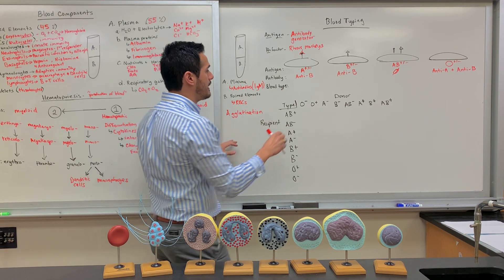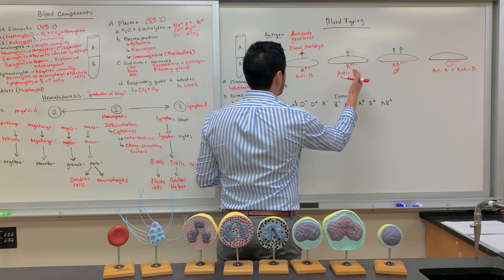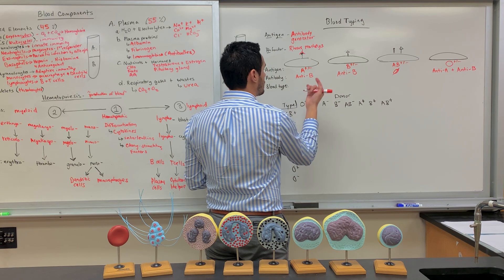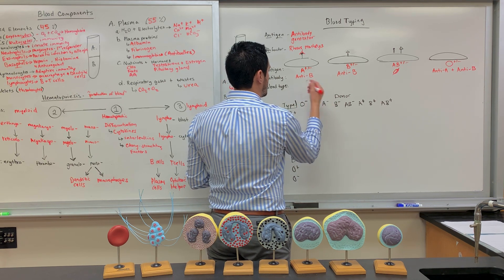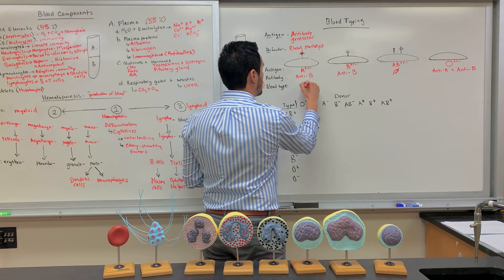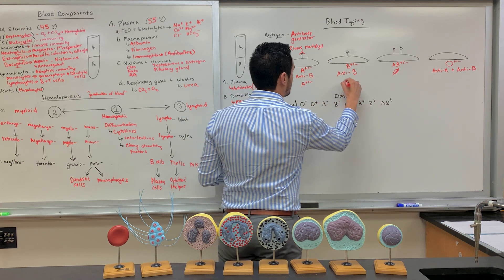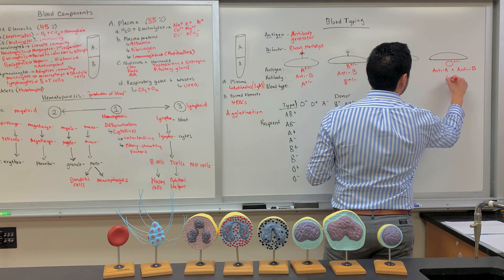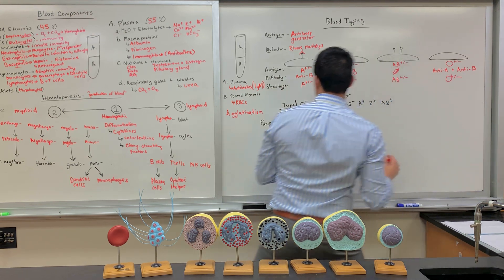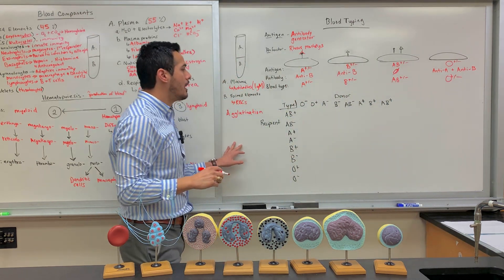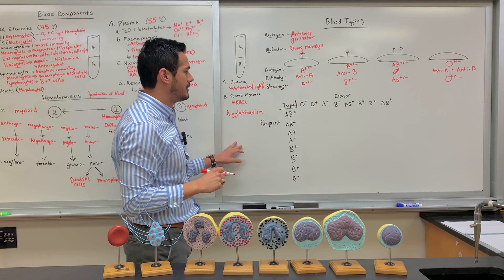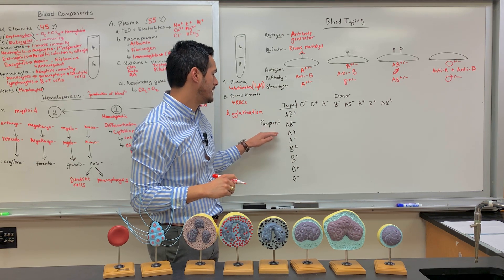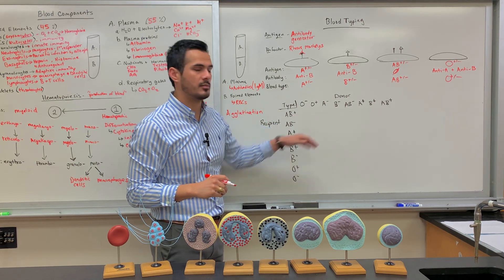Now that we've identified the antigens and all of the different blood types — A positive or A negative, B positive or negative, AB positive or negative, and O positive or O negative — the next thing we're going to do is go over who can donate and who can receive these different blood types.